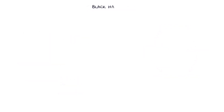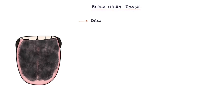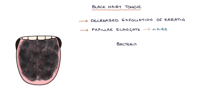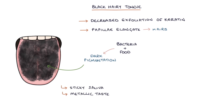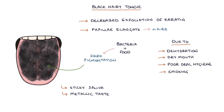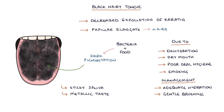Let's talk about black hairy tongue. Black hairy tongue results from a decrease in the exfoliation or shedding of keratin from the tongue surface. The papillae elongate and take on the appearance of hairs. Bacteria and food can cause the dark pigmentation, giving the appearance of black hair on the tongue. Patients may also report sticky saliva and a metallic taste in their mouth. Black hairy tongue may be due to dehydration, a dry mouth, poor oral hygiene, and smoking. Management involves ensuring adequate hydration, gentle brushing of the tongue, and stopping smoking.